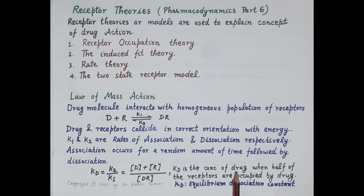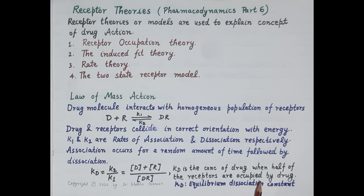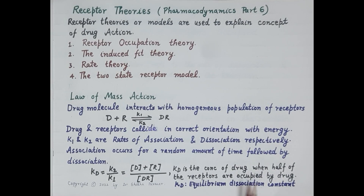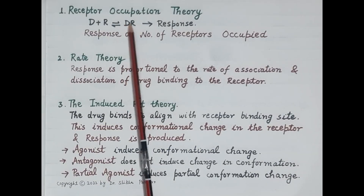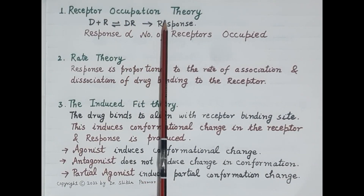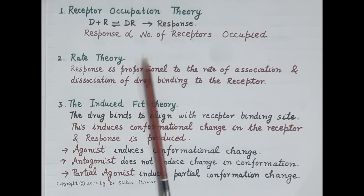If we rearrange this equation, we get an expression for the equilibrium dissociation constant, Kd. The equilibrium dissociation constant is the concentration of drug at which half of the receptors are occupied by the drug and a pharmacological response is produced. Now let's discuss each of these receptor theories one by one.